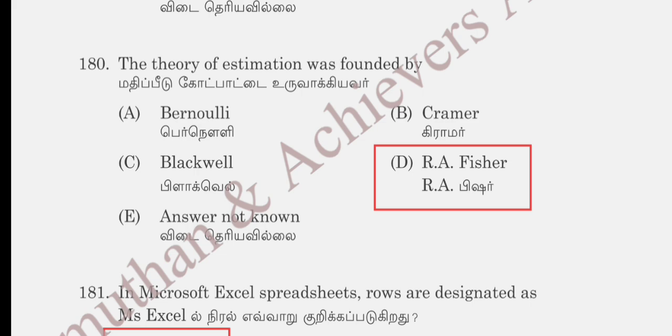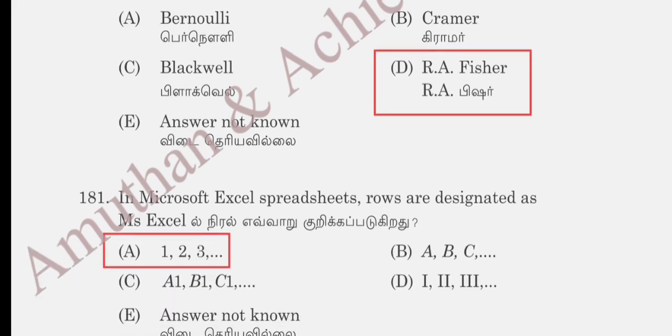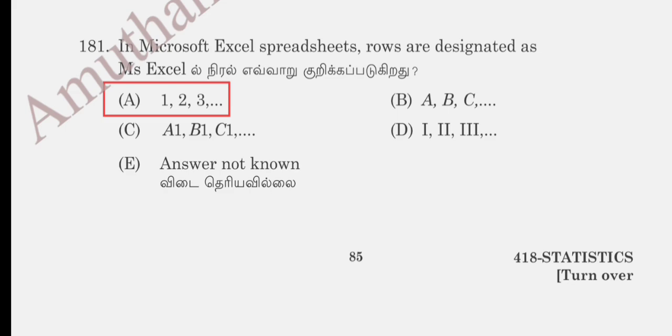The theory of estimation questions 161 to 180 are now complete. Next are questions 181 to 200 on MS Excel and SPSS statistical packages — 20 questions. Question 181: in Microsoft Excel spreadsheet, rows are labeled as: 1, 2, 3 or A, B, C. The answer is 1, 2, 3, option E. Question 182: when the Excel program is opened, the user is presented with a workbook containing how many worksheets? Option B, 3, is correct.